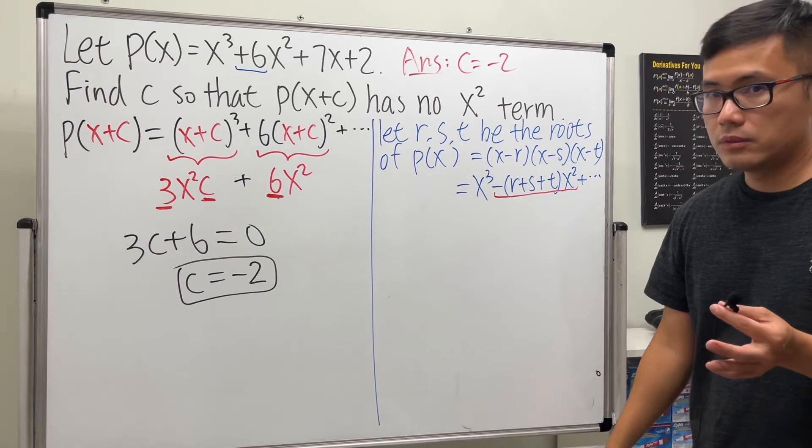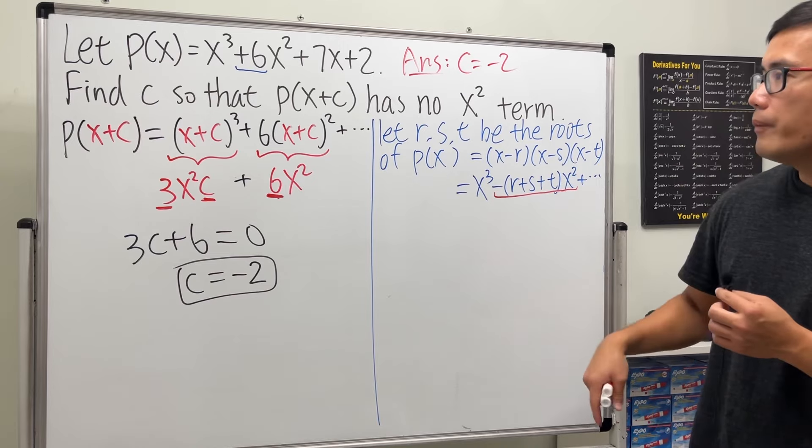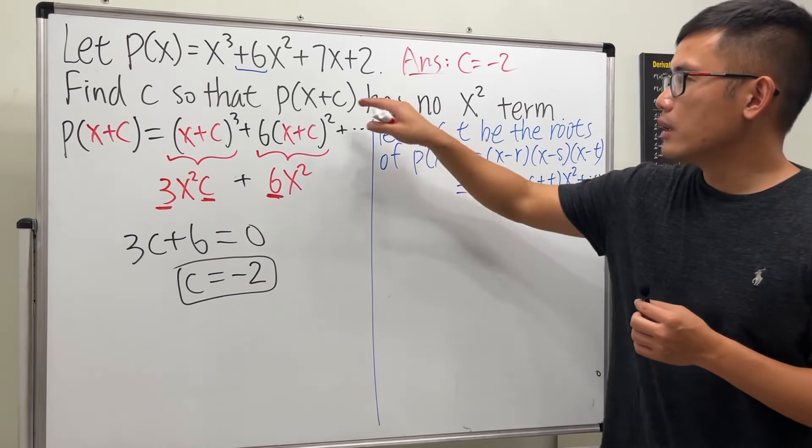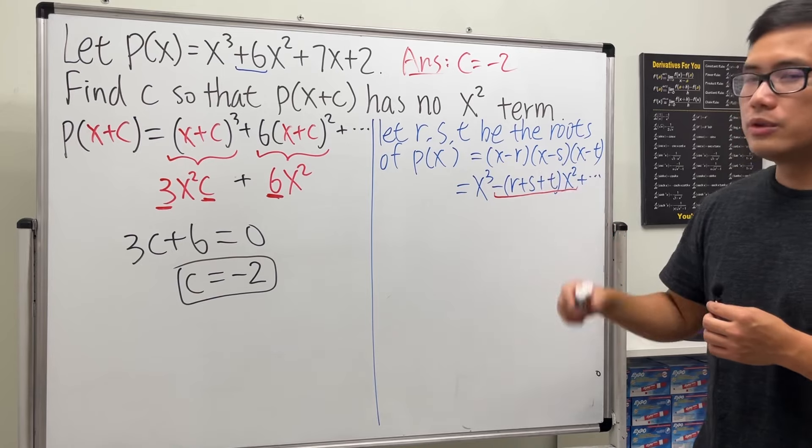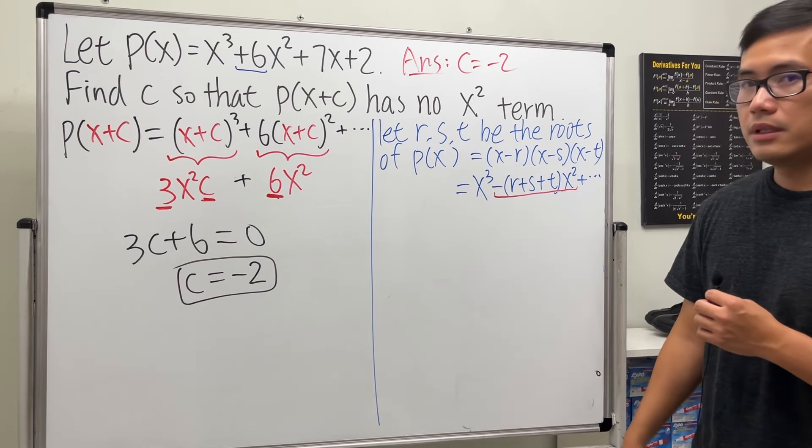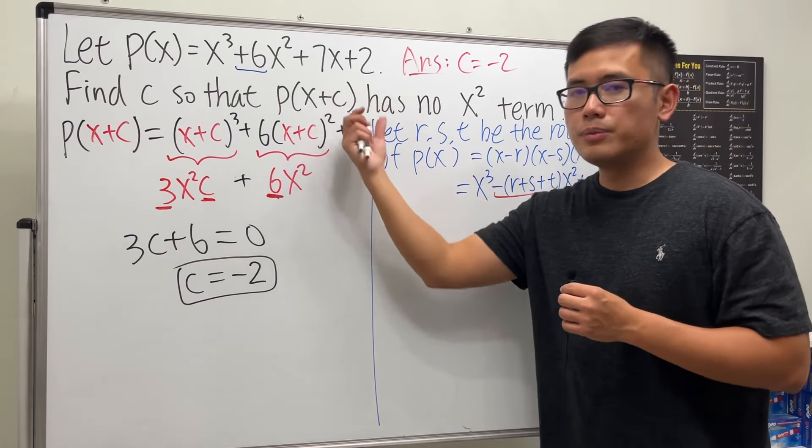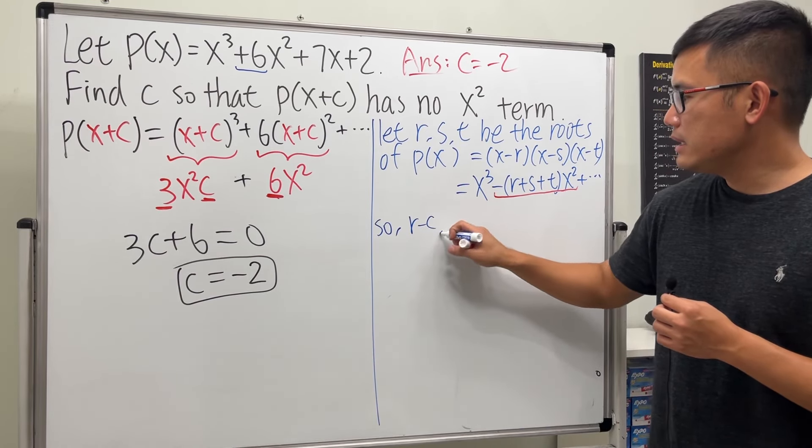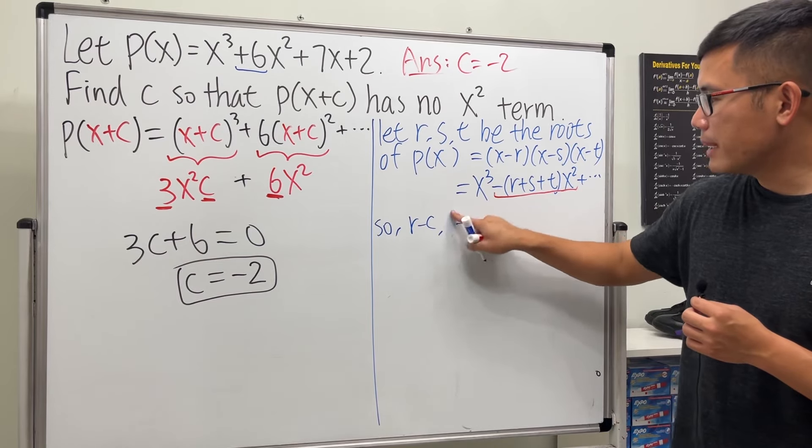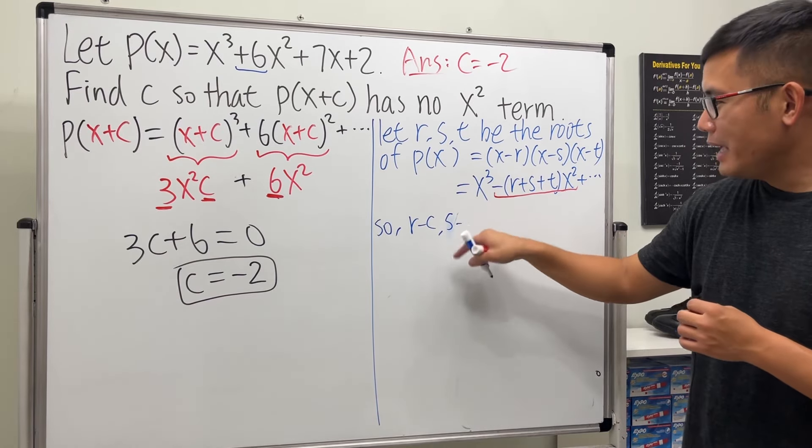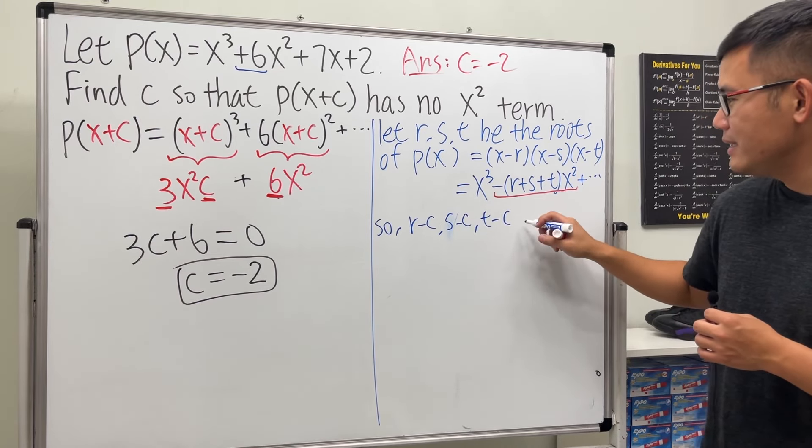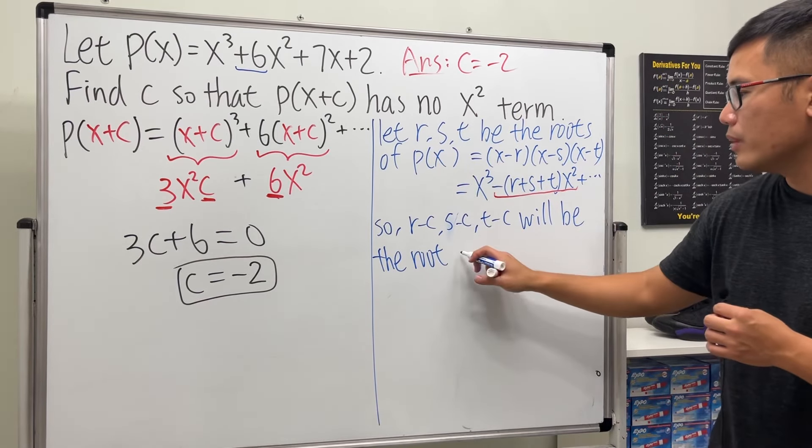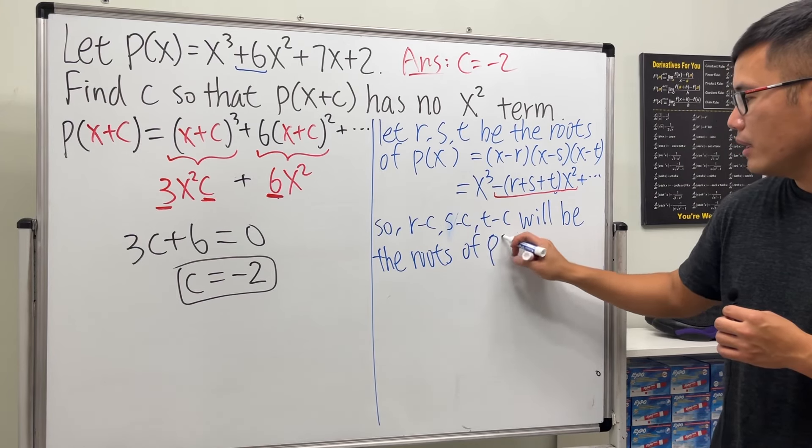If we have this polynomial instead, P(x+c), what's the connection between the roots of this polynomial and the original? When you add c to the new polynomial, you want to get a root just minus c. So r-c, s-c, and t-c will be the roots of our new polynomial P(x+c).